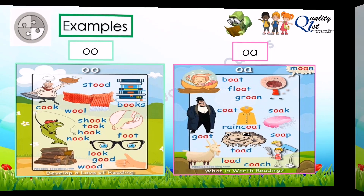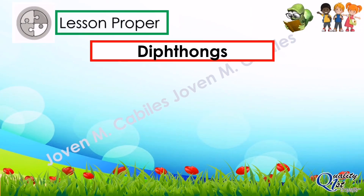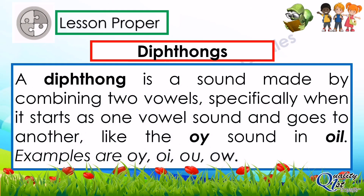Now let's have diphthongs. A diphthong is a sound made by combining two vowels, specifically when it starts as one vowel sound and goes to another, like the OI sound in 'oil'. Examples are OI as in OI, and OY as in OY. We also have OW and OU.